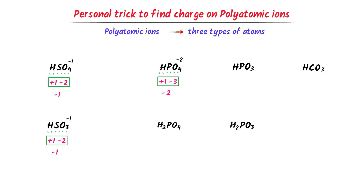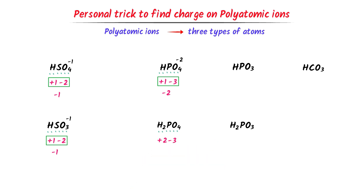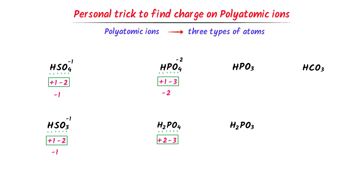In the case of dihydrogen phosphate, phosphate has negative 3 charge and two hydrogen ions have positive 2 charge combined. Positive 2 plus negative 3 equals negative 1. Hence, dihydrogen phosphate has a negative 1 charge. To summarize: hydrogen phosphate has negative 2 charge and dihydrogen phosphate has negative 1 charge.